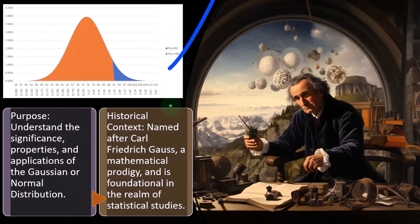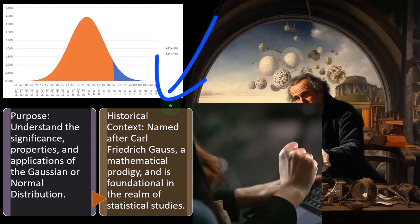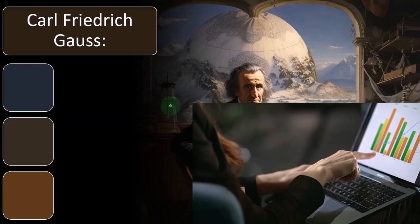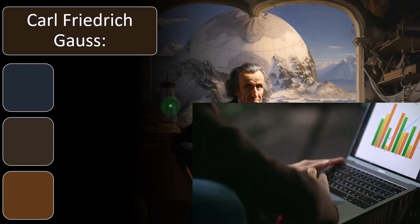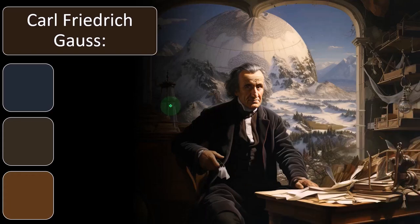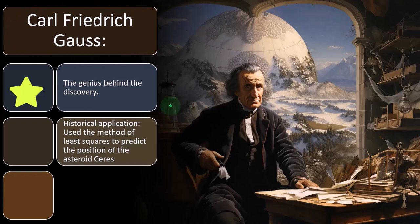So historical concept. It's named after Carl Friedrich Gauss, a mathematical prodigy, and is foundational to the realm of statistical studies. Obviously, the bell-shaped curve, because of its specific and special unique characteristics, is very important to the field of statistics. Carl Friedrich Gauss, the genius behind the discovery.